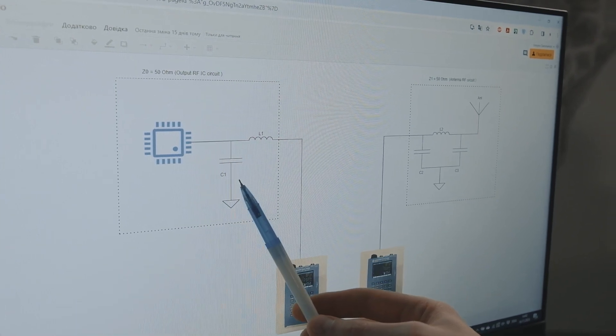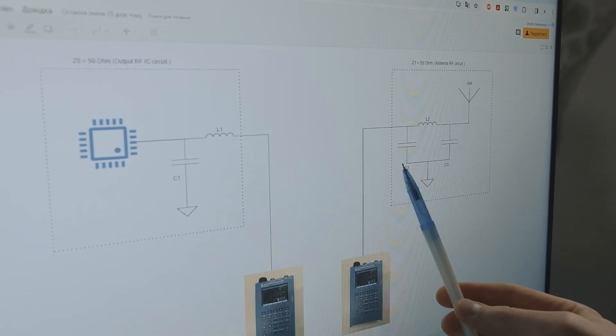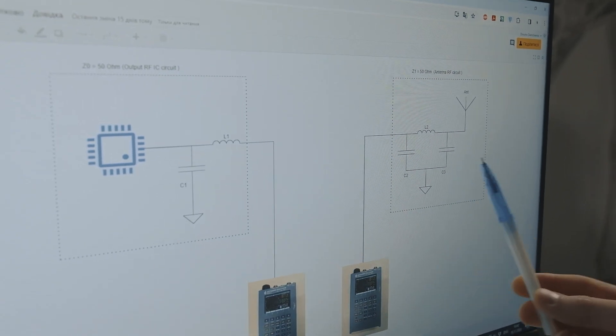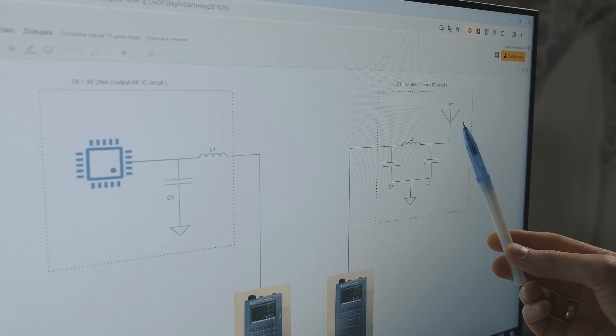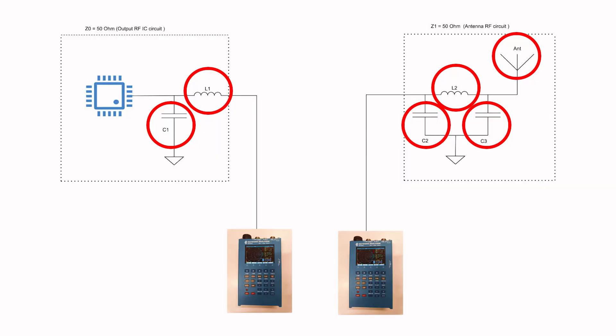For a better understanding, let's look at the case where our RF IC doesn't have a 50 ohm output and requires additional components for matching. In the illustration, there are L1, C1, L2, C2, and C3 with antenna as matching components for an output antenna circuit which also needs to be 50 ohms. In our case, both circuits are required to be matched and reach 50 ohms.